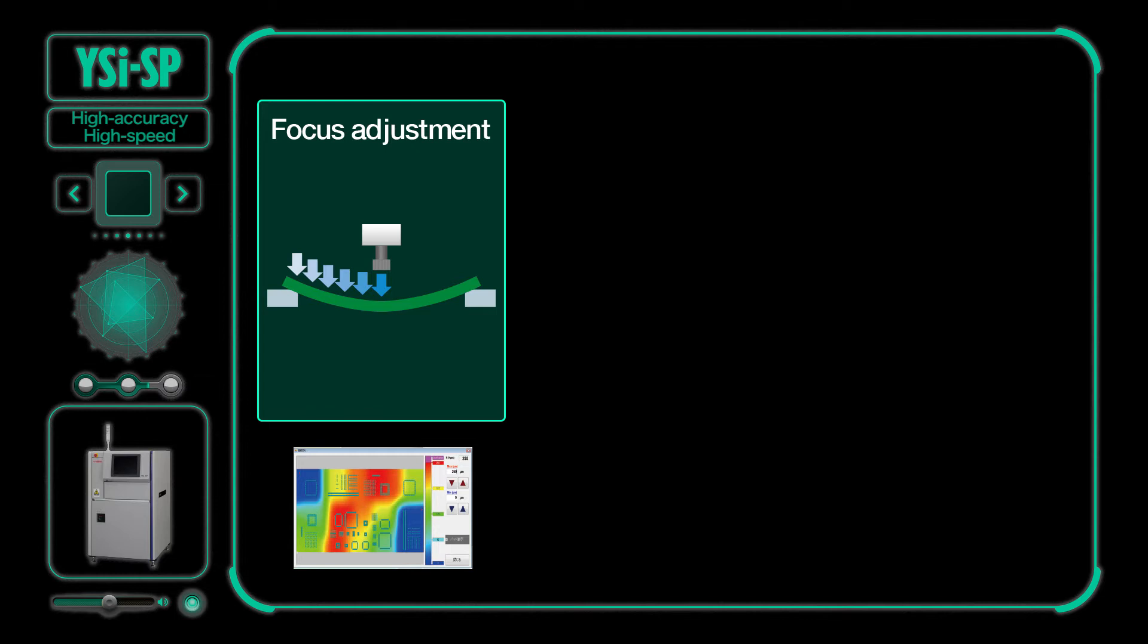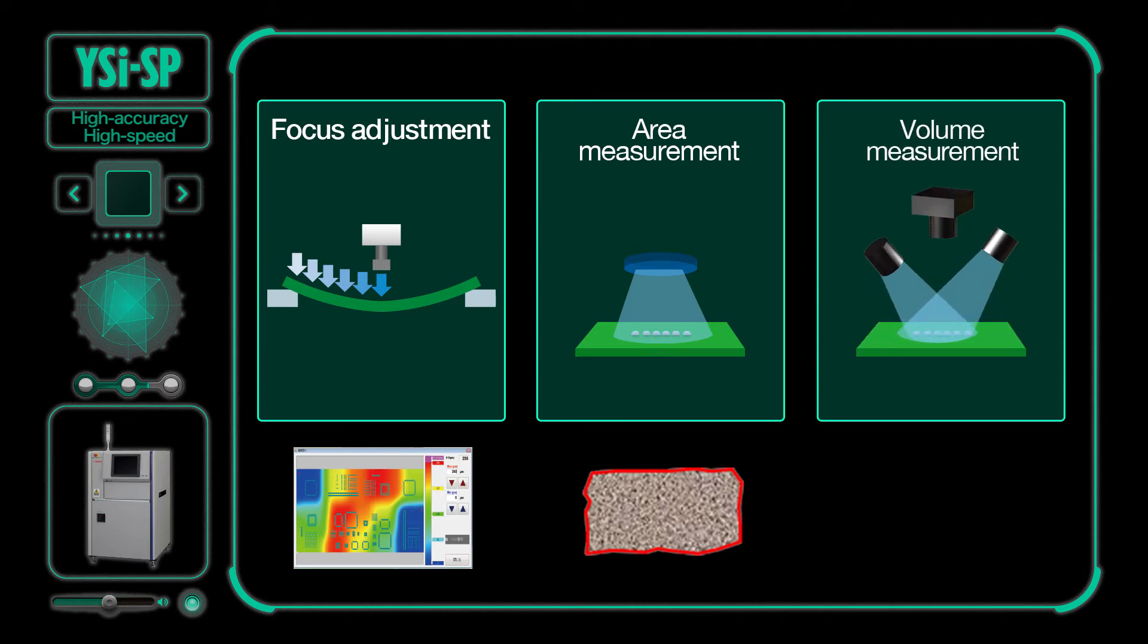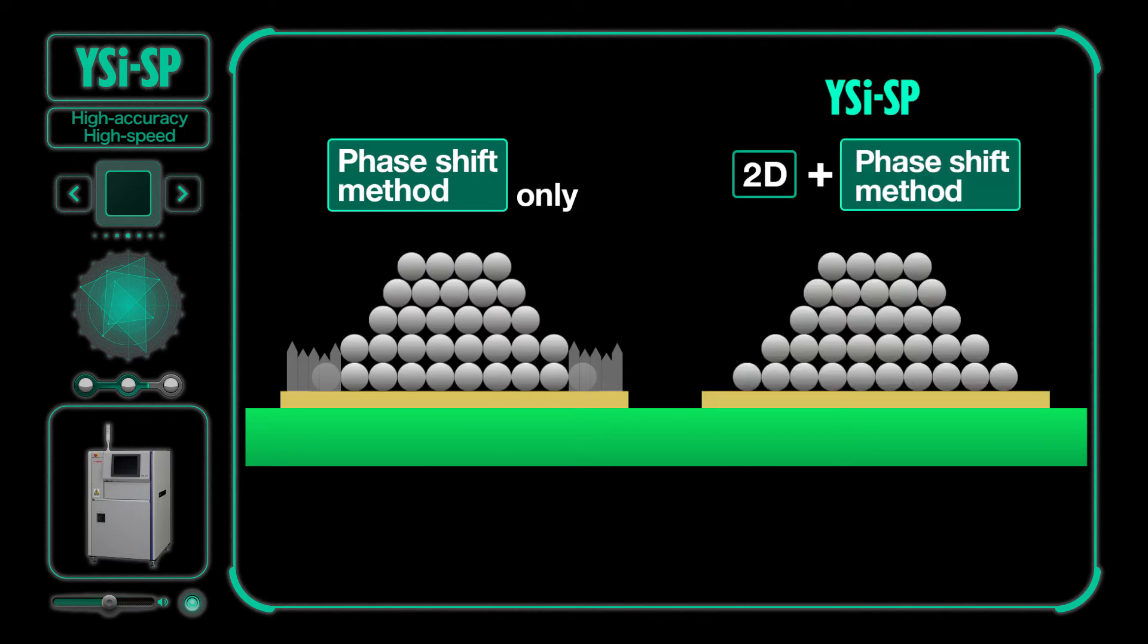Area measurement: Second, it measures the solder paste area by accurately extracting the solder contour via 2D ring lighting. Volume measurement: Then the solder paste height is measured by a phase shift method to extract solder volume. Yamaha accurately reconstructs solder shape by combining this phase shift method along with 2D contour extraction, boosting inspection accuracy to yet a higher level.